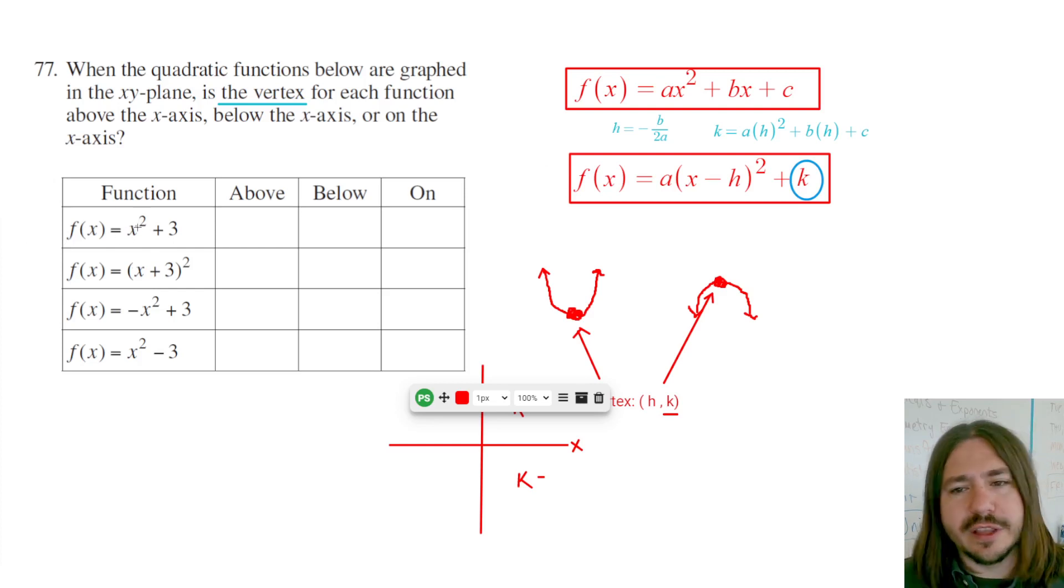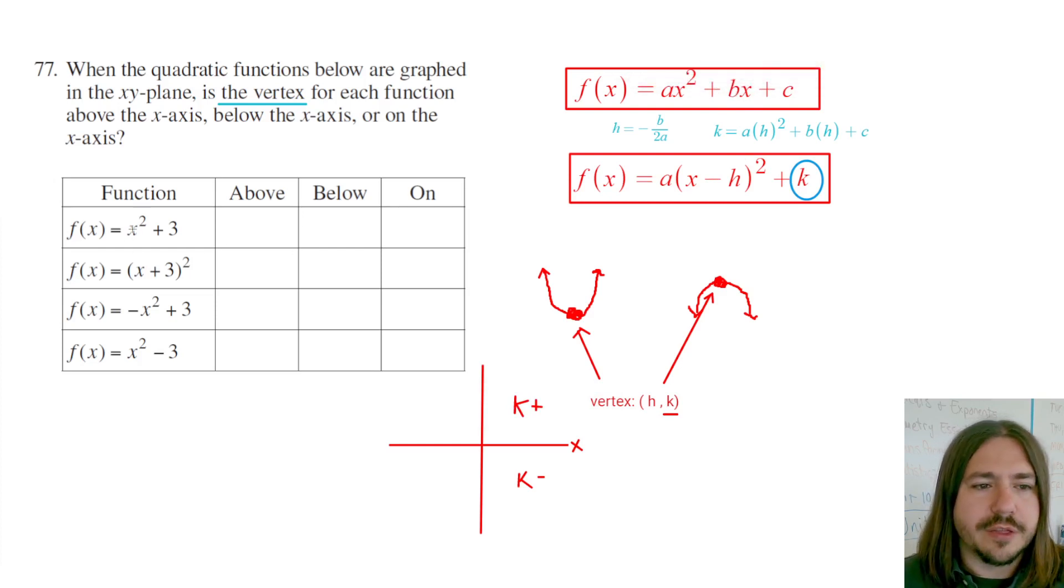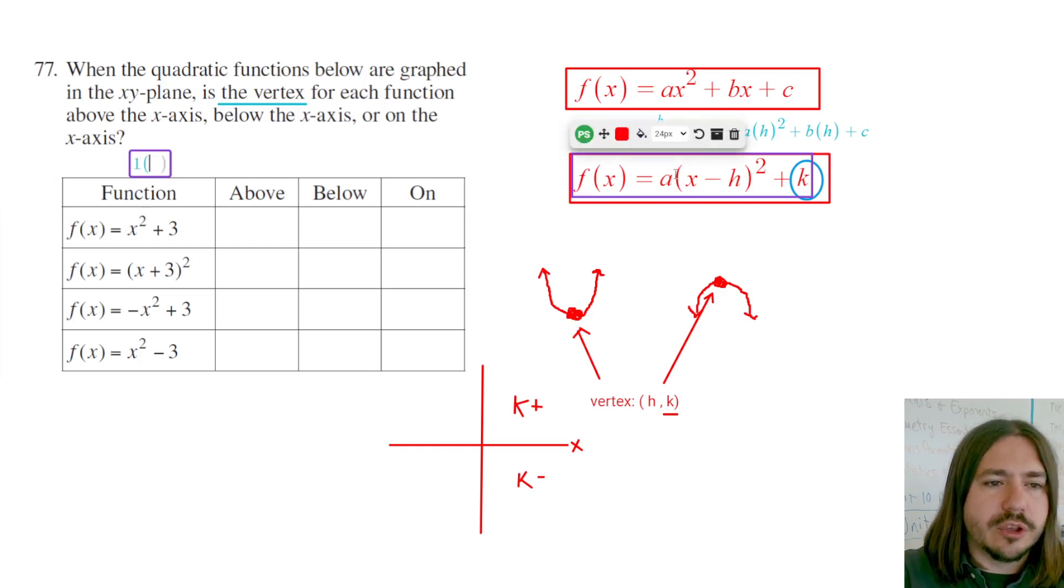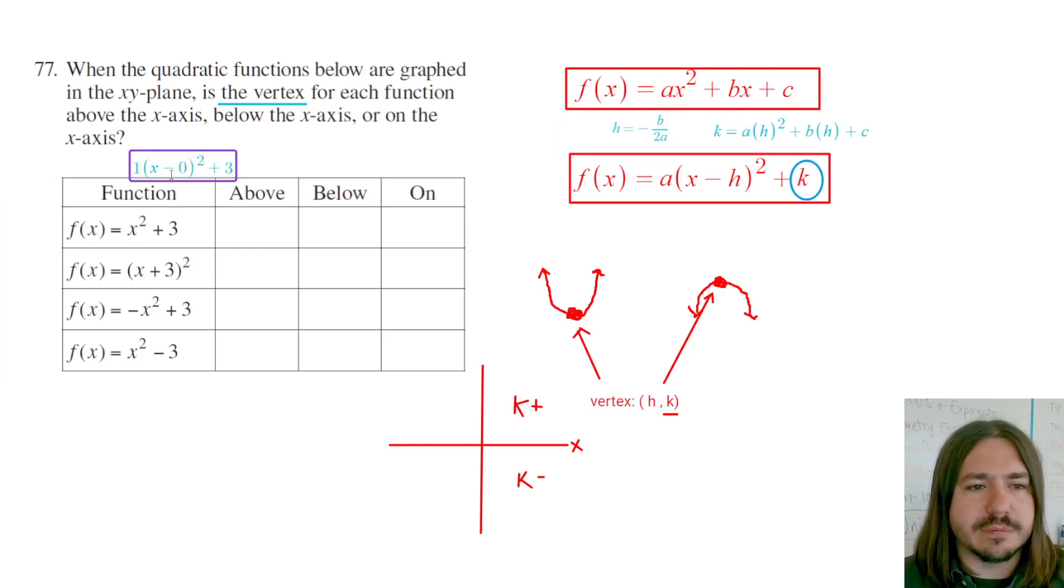So this first one, you might think, wait, that doesn't look like vertex form. That looks more like standard form. But if you don't have this middle term, if you don't have this linear term with the bx, with like an x by itself, then really what that means is that that minus h is actually zero. So you could write this first equation like 1 times x minus 0 squared plus 3. It's just that subtracting 0 and multiplying by 1 don't actually do anything. So the k here is going to be 3. Since that's positive, it's going to be above the x-axis.